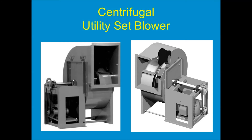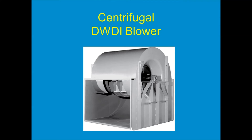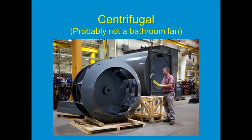The centrifugal impeller is also what's used in a big double width double inlet blower. Some of these fans are the size of a house, but it's the same principle — the blades create a low pressure in the center, air is drawn in from both sides, then it follows the shape of the housing and discharges out the lower left of this fan. This is a 73-inch diameter centrifugal impeller — that's a pretty big fan. I suspect this is not the fan they're using for bathroom exhaust, but you never know.